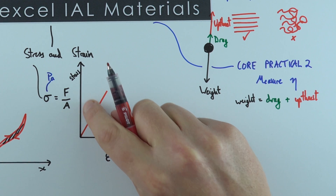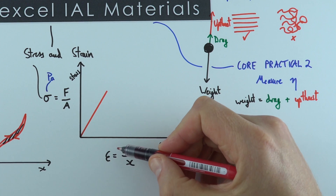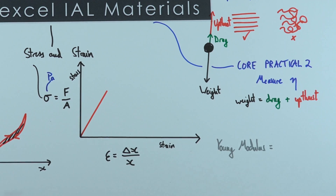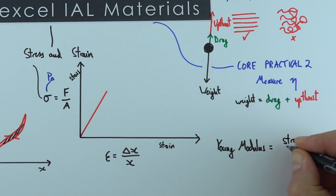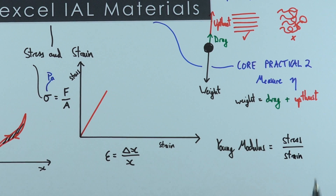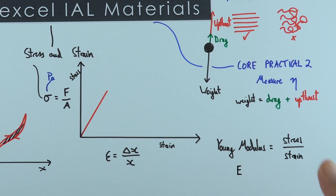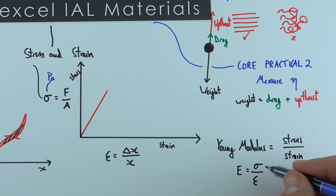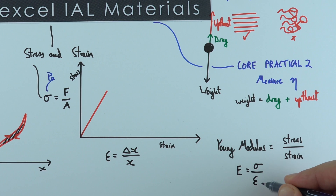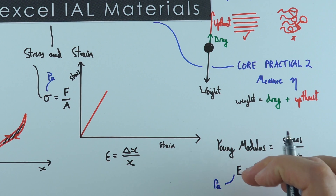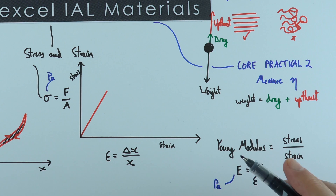Initially the material shows a linear region where stress is proportional to strain, and we can use this to work out the Young modulus. The Young modulus (symbol E, also called the engineering modulus) is equal to stress divided by strain. Because stress is in pascals and strain is unitless, the Young modulus is also in pascals. This is a property specific to that material — for example the Young modulus of steel — and does not depend upon the dimensions of the object being tested.